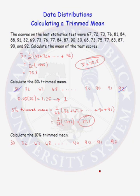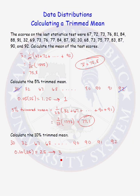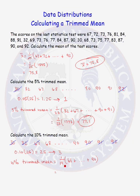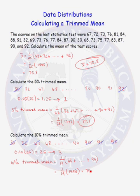Now let's calculate the 10% trimmed mean. We have to figure out how many data points to remove from the low side and the high side of the data set. We want to take off 10% of the data — 10% of 25 is 2.5 — rounding to the nearest integer, we get 3. We remove the 3 lowest scores and the 3 greatest scores. Our 10% trimmed mean will be 1/19th of the sum of the 19 remaining data values. We started with 25 and removed 6, leaving 19. The sum is 1493; dividing by 19 gives us a 10% trimmed mean of 78.6.